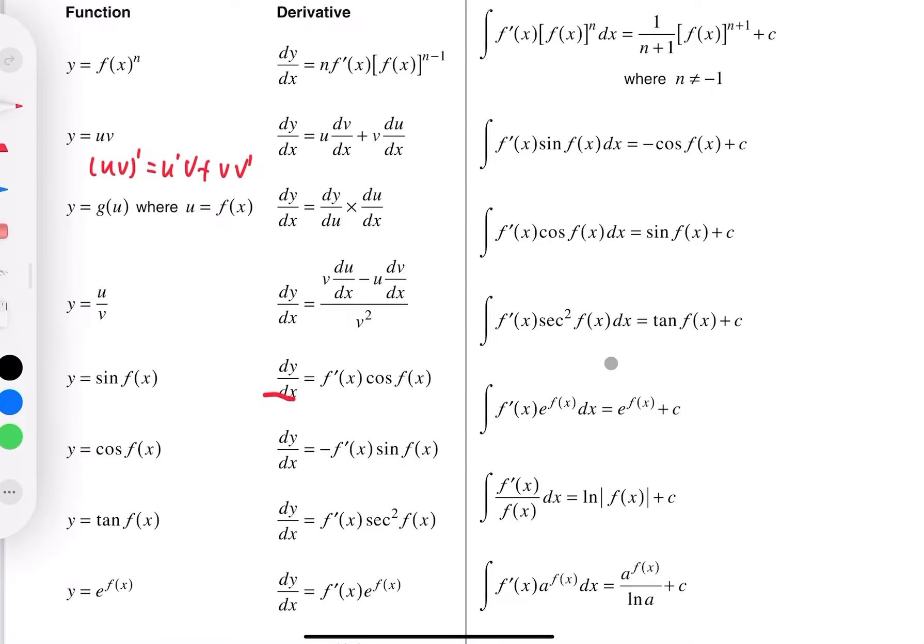For the quotient rule, it's the same. If you have u over v dash, then it will be equal to v times u dash minus uv dash over v squared. Okay, so that's just another way to write it. Product rule and quotient rule.